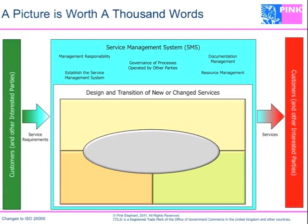Moving forward, there is a new section: the design and transition of new or existing services. This is the combination of the original Sections 3 and 4 — planning and implementing service management, and planning and implementing new or changed services — all combined into a brand new section. This section adds how to design and develop new or changed services, how to transition those services, and provides quite a bit more detail for service providers as they think about managing the changing service portfolio.